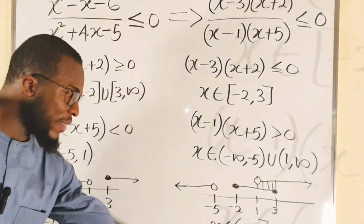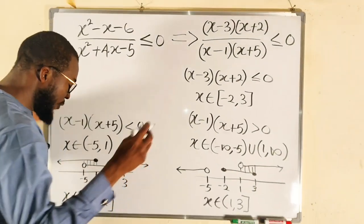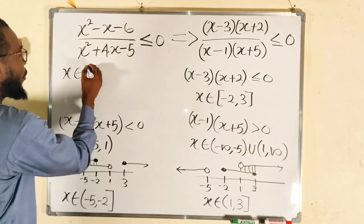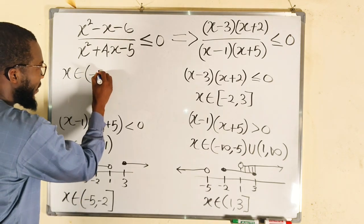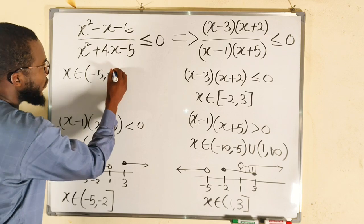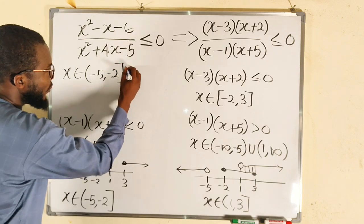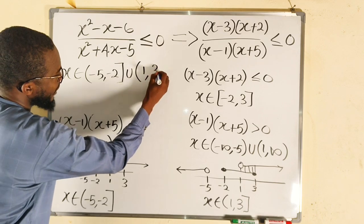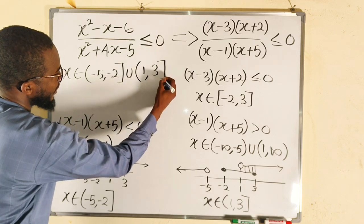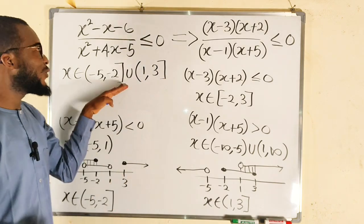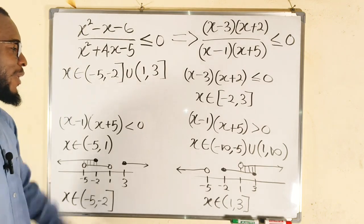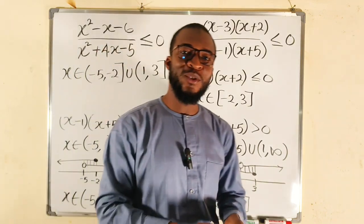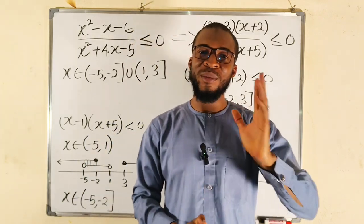The general solution is the union of both conditions: x belongs to the set of values from negative 5 to negative 2 (negative 2 included) union from 1 to 3 (3 included). This is the general solution to this problem. Thank you for watching — do share with your learning colleagues and don't forget to subscribe to my YouTube channel for more exciting videos. Bye!